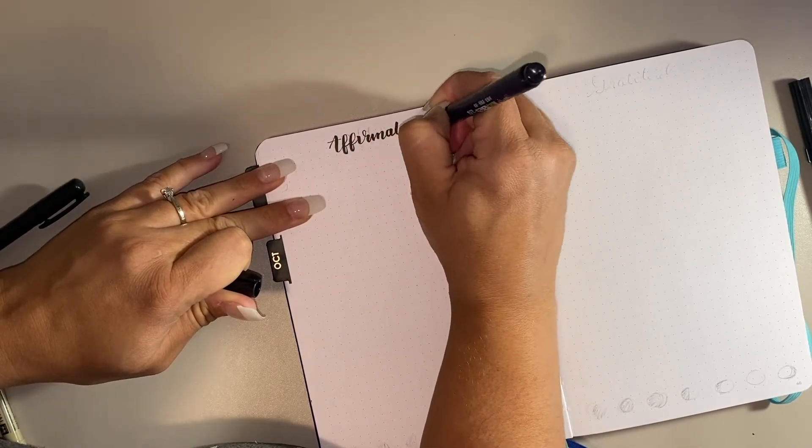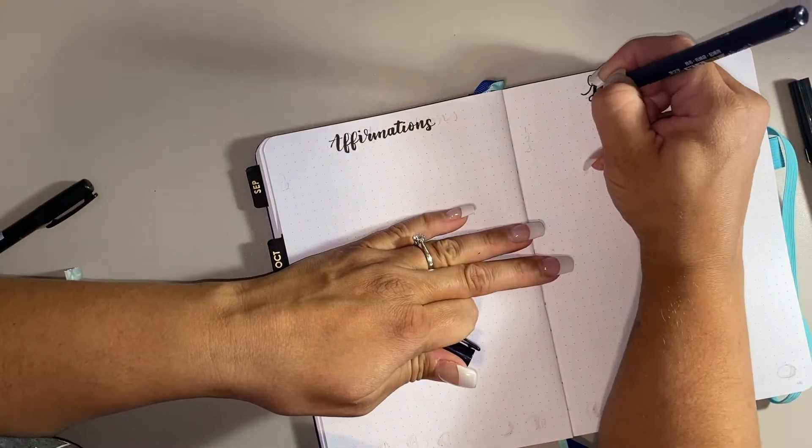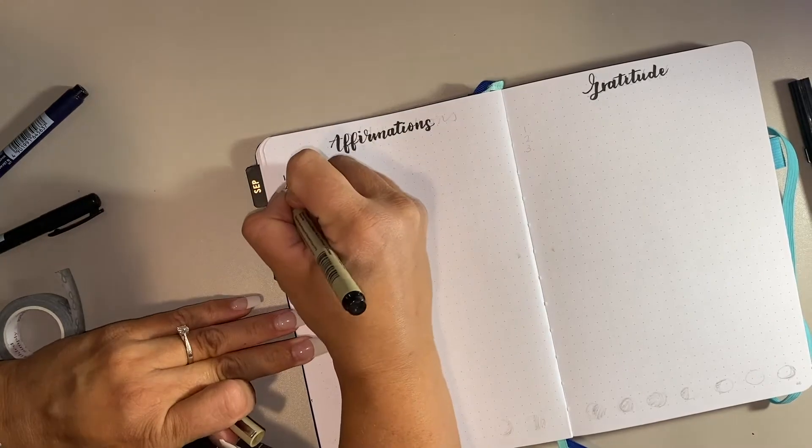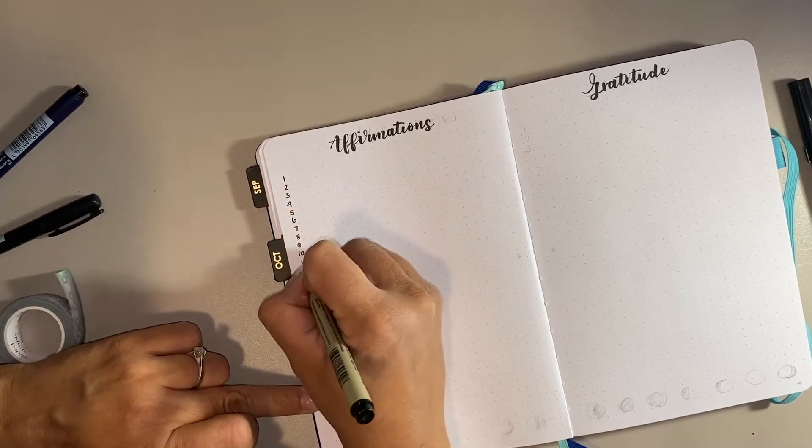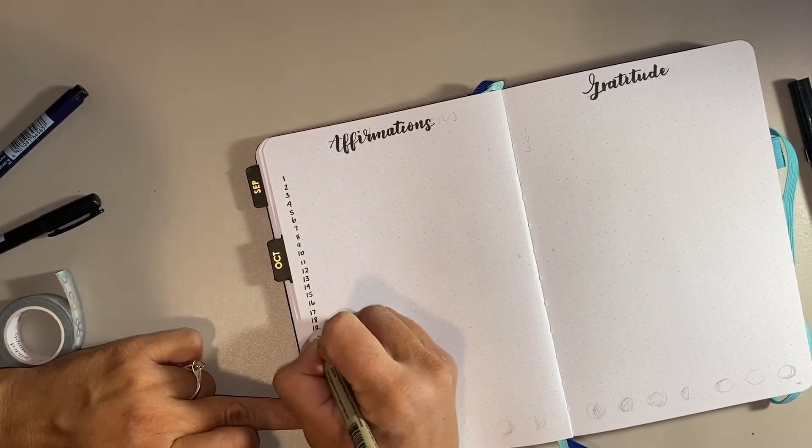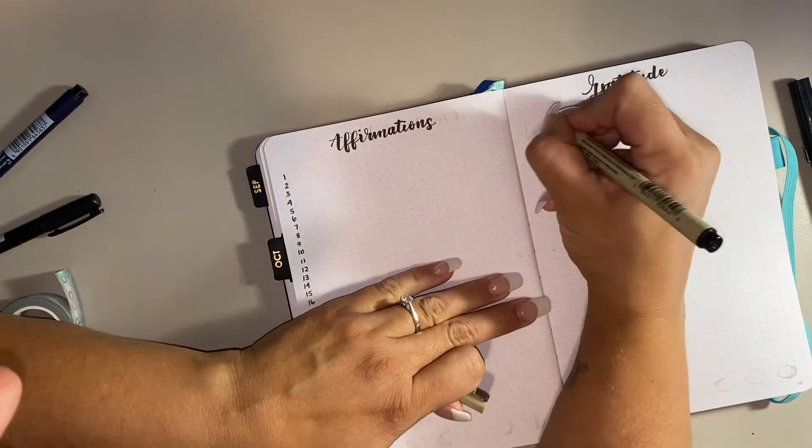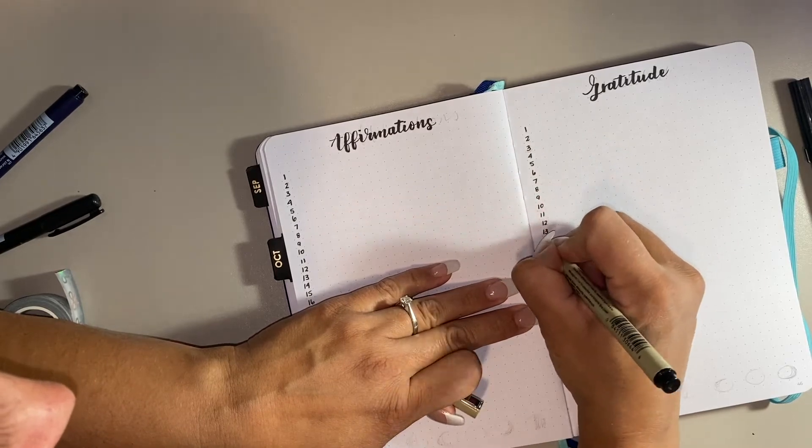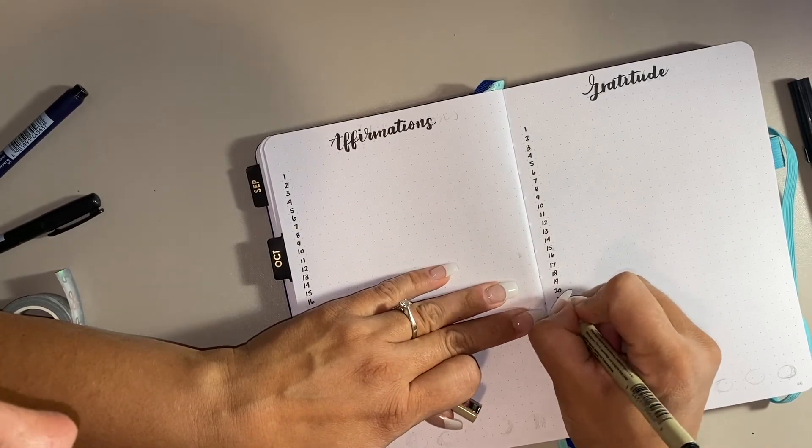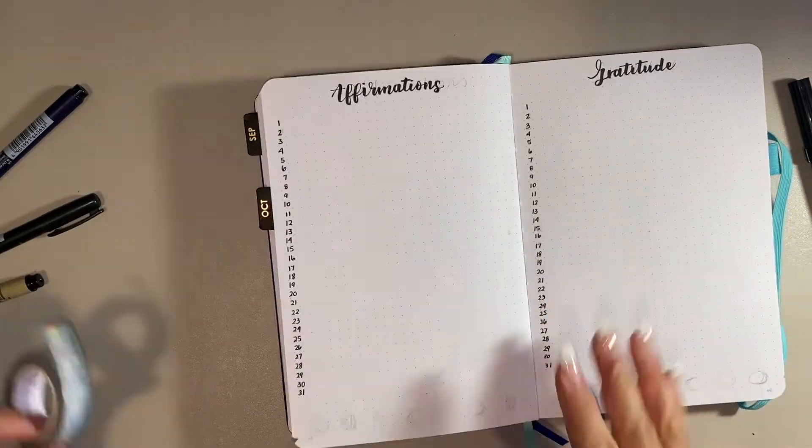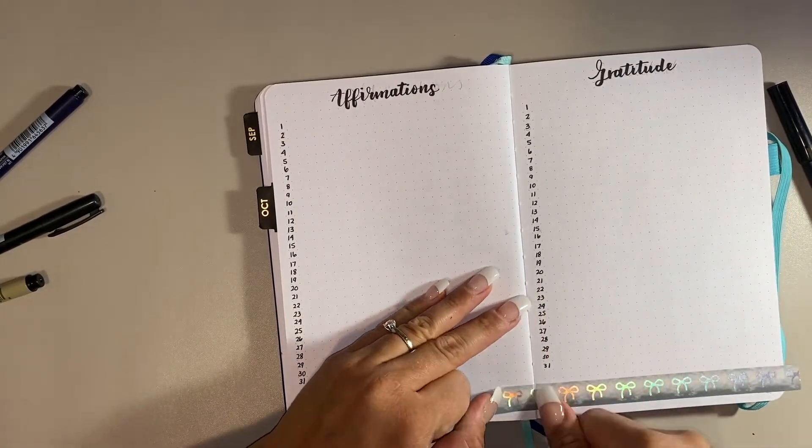These next two pages are a little more boring. Basically all they are are my affirmations and gratitude. I do find that when I do these pages every month, I feel like I'm a bit more positive, and this really helps for journaling and reflecting. I don't normally journal in my bullet journal, but this is the only place I do affirmations and gratitude, so I really enjoy it. And again, I add that same washi tape to the bottom.